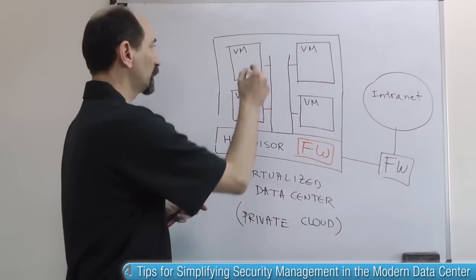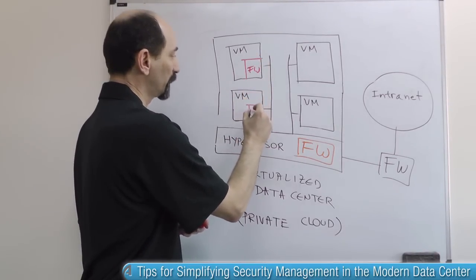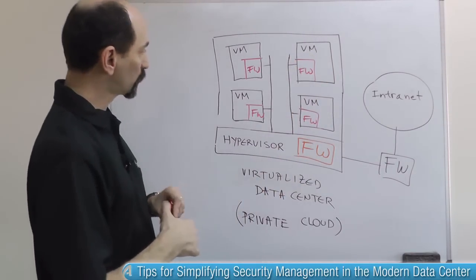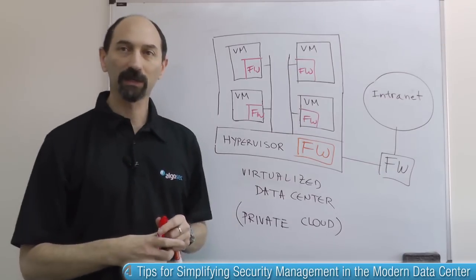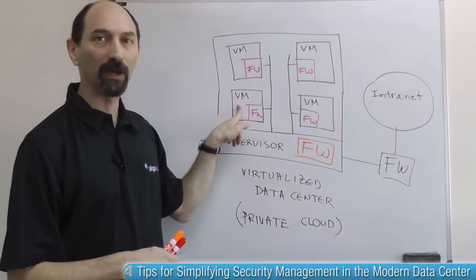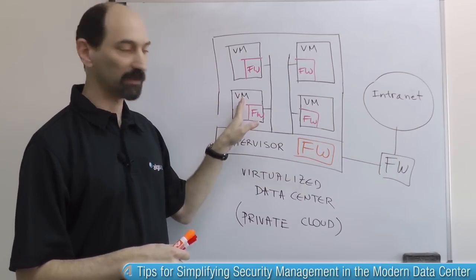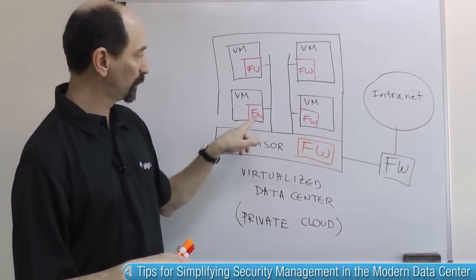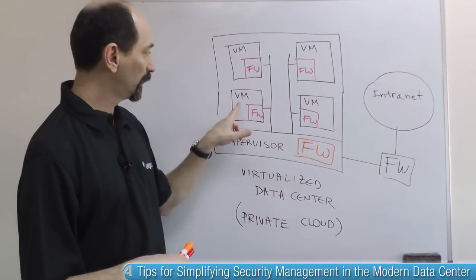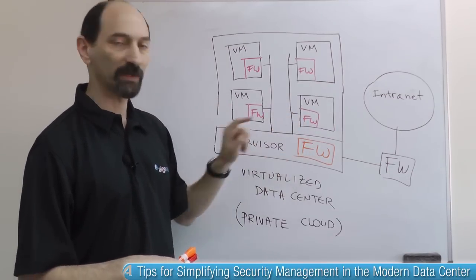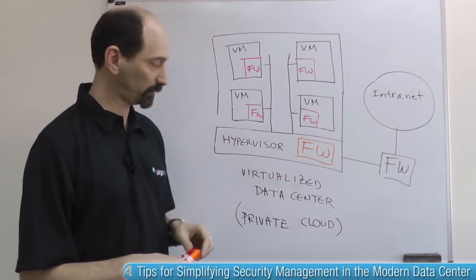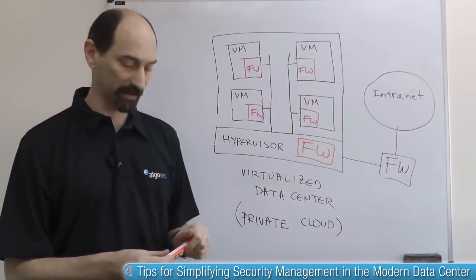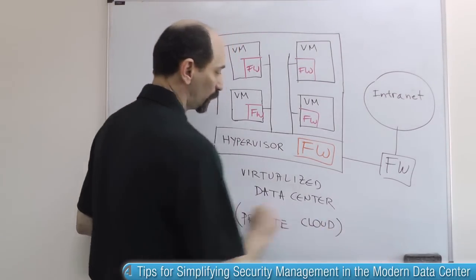The other option is to have per-host firewalls — one inside every VM. Each one of these host-based firewalls inside the VMs protects its own VM and separates it from all the other VMs and from whatever is on the outside. There are technologies that let you instrument your private cloud either using host-based firewalls or using hypervisor-level firewalls, or you could even have both. You can have points in this infrastructure where you can instrument policy and make sure that only the traffic that you want to allow gets through.